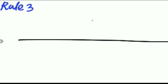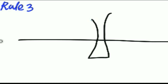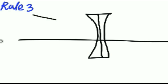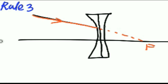Rule number three: suppose this is the principal axis and this is a concave lens. If any ray of light going towards the focus of a concave lens, after refraction it becomes parallel to the principal axis. This one is the focus, and this one is the refracted ray.